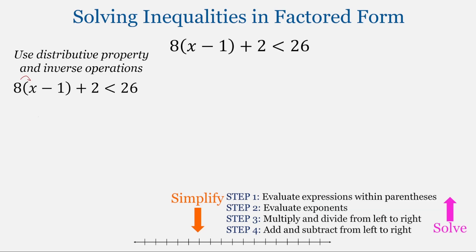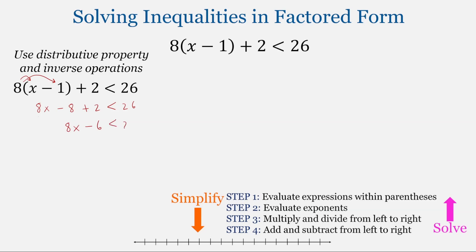We'll use the distributive property to multiply 8 times the quantity x minus 1, distributing the 8 to both terms within the parentheses. This gives us 8x minus 8, and then we'll bring down the plus 2, less than 26. From here, we'll combine like terms: 8x minus 6, less than 26.